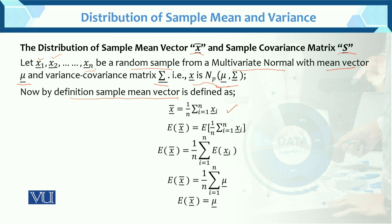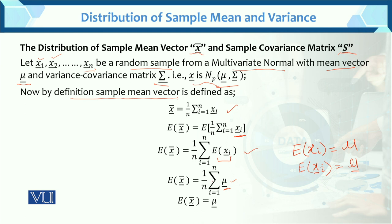We apply expectation on both sides — expectation applies to the random variable. As you know, the expected value of xᵢ equals μ in the univariate case; same in the multivariate case, the expected value of xᵢ vector equals the mean vector. Since 1/n is a constant, we get n times the mean vector divided by n. Cancelling, the expected value of x̄ vector equals the mean vector μ.